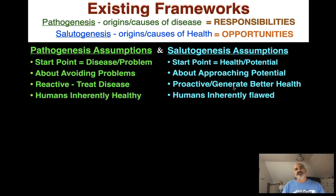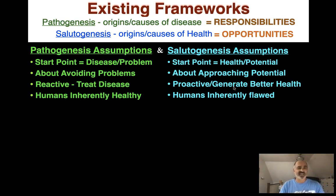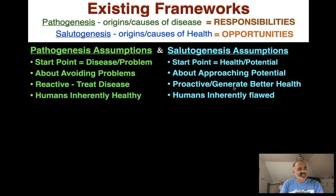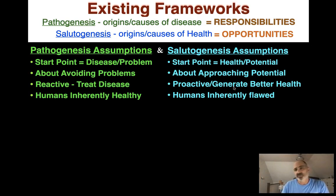The unique assumptions under these two different philosophies are: although pathogenesis is about disease and problems, it has the assumption that we're inherently healthy — that if nothing else is going on, we should be as healthy as we can be. But that's really not true. Salutogenesis, although it's about the causes of health, says we're inherently flawed, that bad things can happen. So we need to go out and get ourselves healthy so when that does happen, we can overcome it, or it may not bother us in the first place.